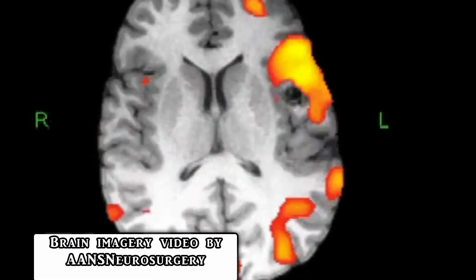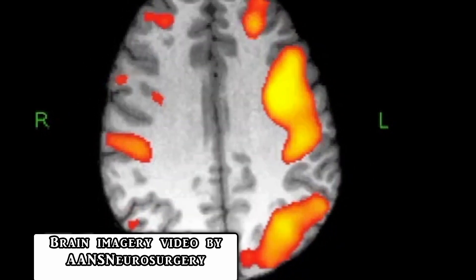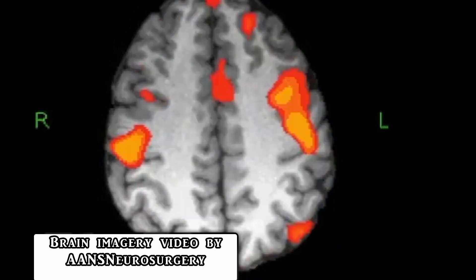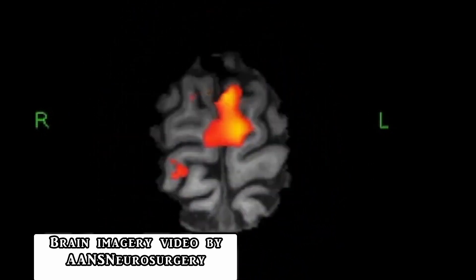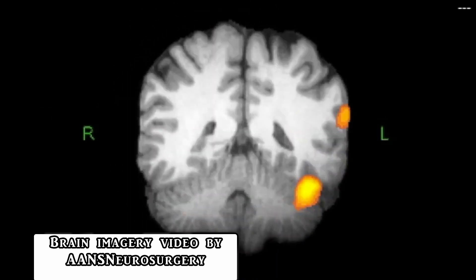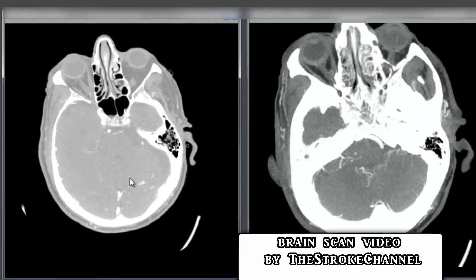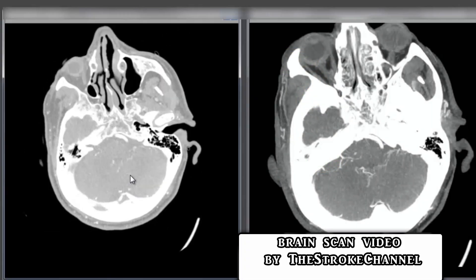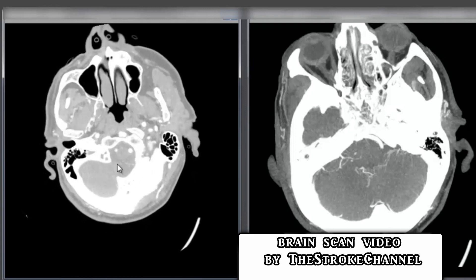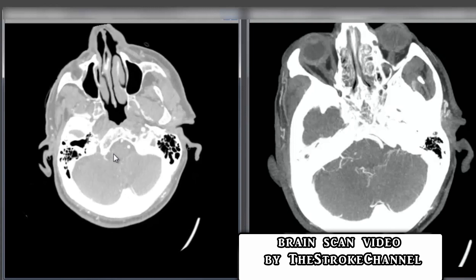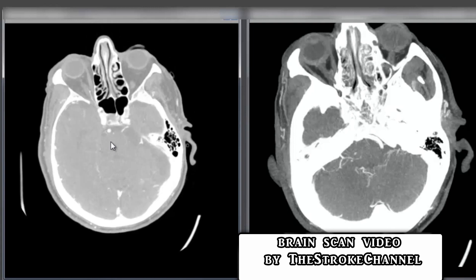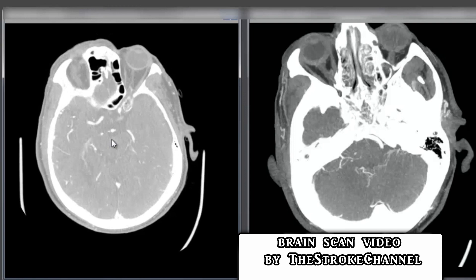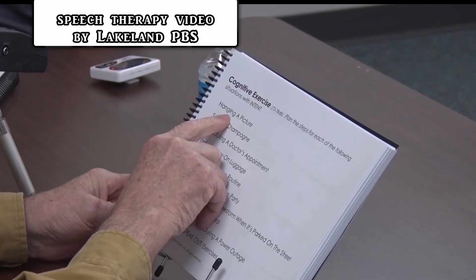Aphasia generally results due to damage to the left hemisphere of the brain, especially the temporal lobe. The type of aphasia that you develop is related to which areas are damaged. If you scan a person's brain and look at the damage, you can sometimes predict which kind of aphasia they will experience, although it isn't a perfect science.